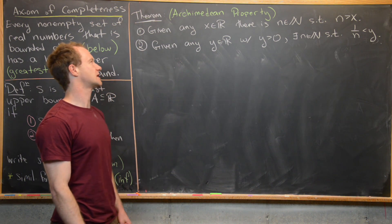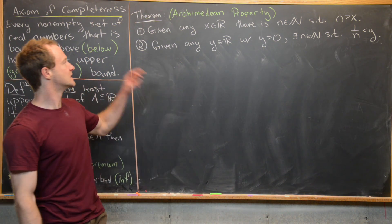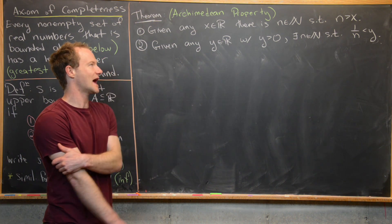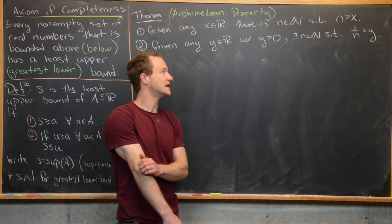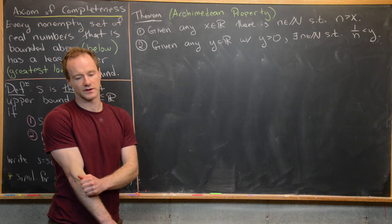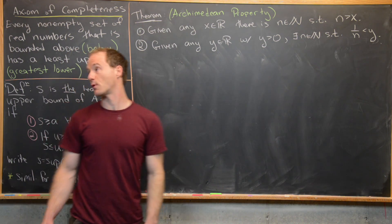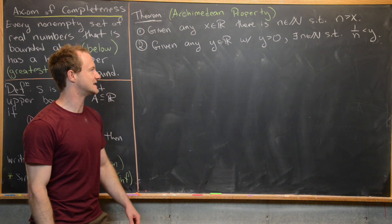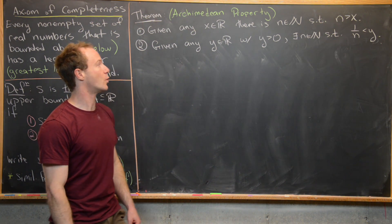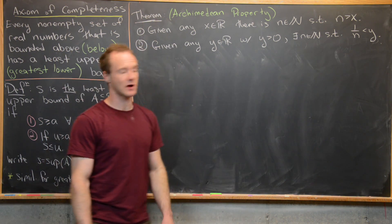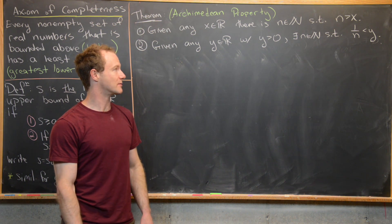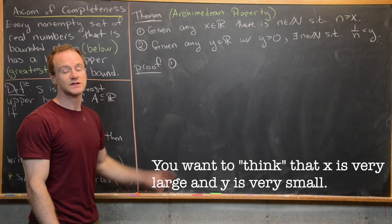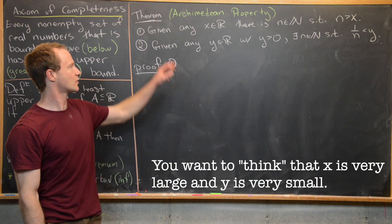The next consequence is called the Archimedean property, which has two parts. Part one: given any real number X, there is a natural number N larger than X. Part two: given any real number Y greater than zero, there is a natural number N such that 1/N < Y.